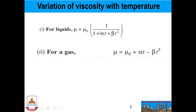The relation between viscosity and temperature for liquids is: mu equals mu-naught times 1 divided by (1 plus alpha·t plus beta·t²), where mu-naught is the viscosity of the liquid at 0 degrees centigrade in poise, and alpha and beta are constants for liquids. For water, mu-naught equals 1.79×10⁻³ poise, alpha is 0.03368, and beta is 0.00221. This equation shows that with increase of temperature, viscosity decreases in case of liquid.